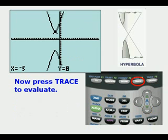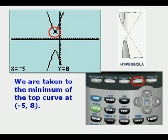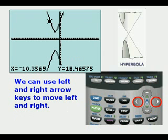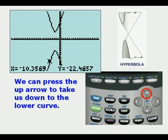We press Graph to look at it and now press Trace to evaluate and it takes us immediately to the minimum of that top curve. We can use left and right arrow keys to move left and right on that top curve. We can press the up arrow to take us down to the lower curve. Here we've done it.